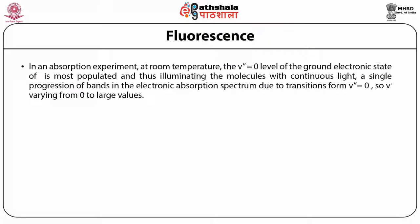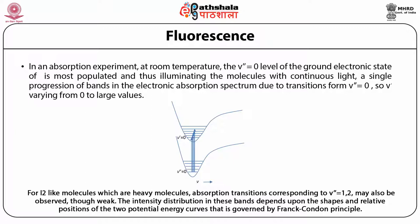Fluorescence: In an absorption experiment at room temperature, the nu'' = 0 level of the ground electronic state is most populated, and thus illuminating the molecules with continuous light gives a single progression of bands in the electronic absorption spectrum due to transitions from nu'' = 0, with nu' varying from zero to large values. For iodine molecules, which are heavy molecules, absorption transitions corresponding to nu'' = 1, 2, etc. may be observed though weak.